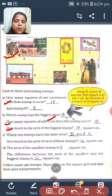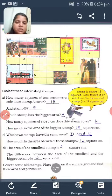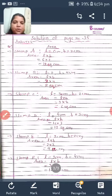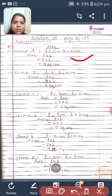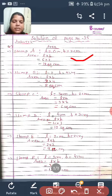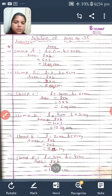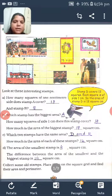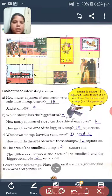Next question: How much is the area of the biggest stamp? It is 18 square centimeters. How can you find it? You can find it with this formula. Length is 6 and breadth is 3. So when you multiply it, 6 times 3 is 18. So the area of stamp A is 18 square centimeters.